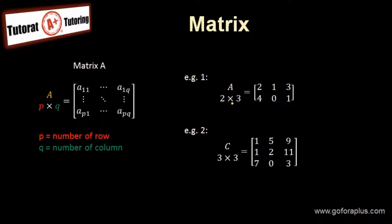Example 1: matrix A is 2 by 3, meaning there are 2 rows and 3 columns. Example 2: matrix C is a 3 by 3, so 3 rows and 3 columns.